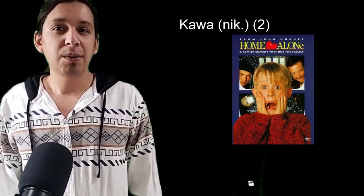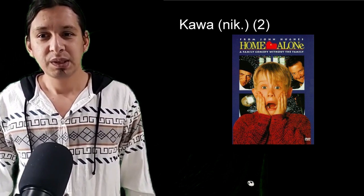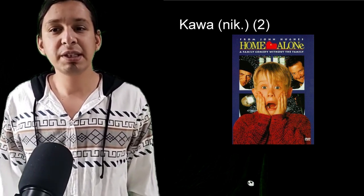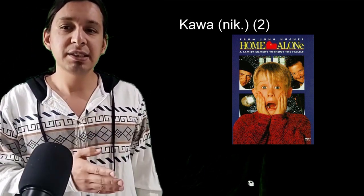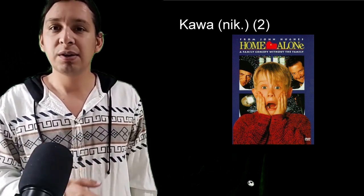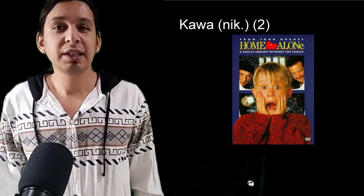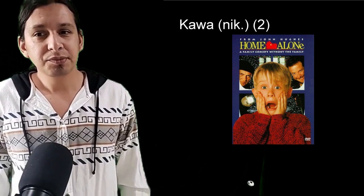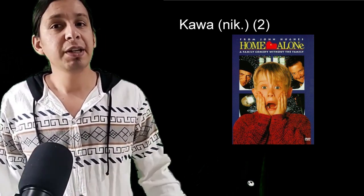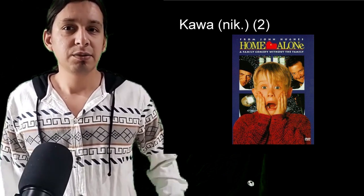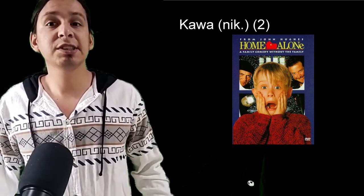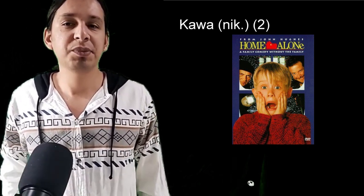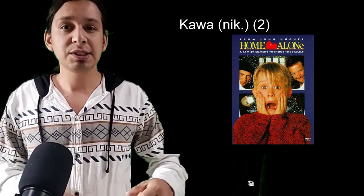Our first new word is kawa. Like a dictionary would tell you, it's marked nik, which tells you it's transitive — ni means I and k means it. So you'd say nikkawa, which means 'I leave it.' Now this is not leaving like leaving a place. This is leaving like leaving an item or leaving a person. Kawa is to leave something behind.